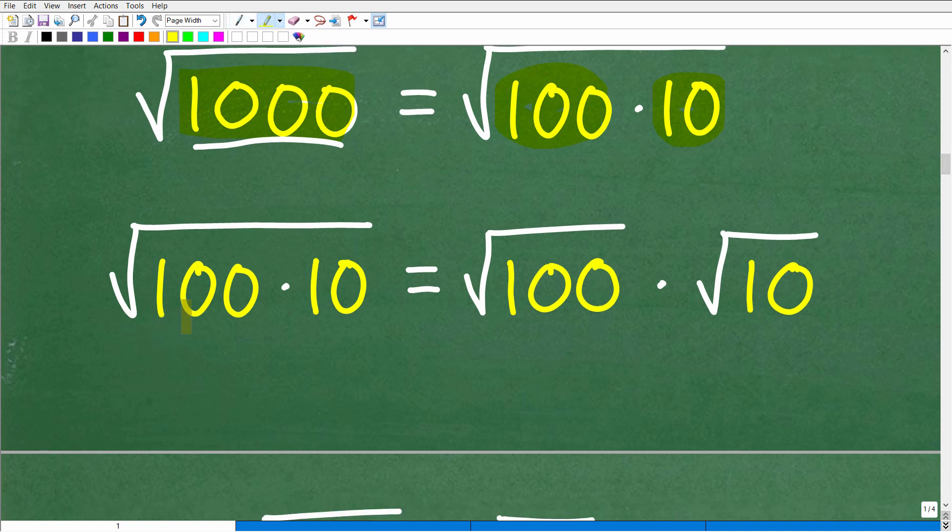Okay, so again, the square root of 1,000 is the same thing as the square root of 100 times 10. These two factors we can split, and this is the key right here. So the square root of 100 times 10 is the same thing as the square root of 100 times the square root of 10.